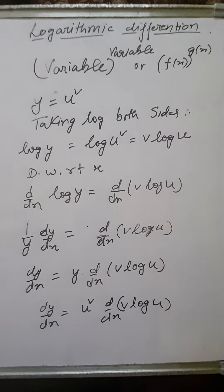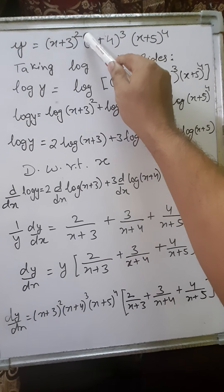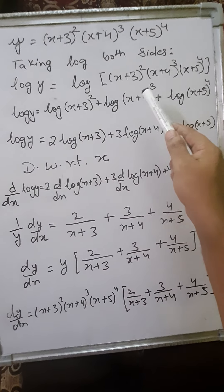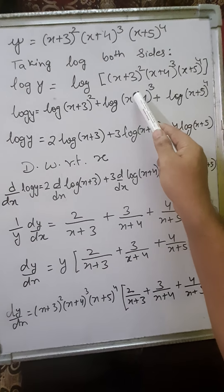Let's solve a few sums to understand the topic more clearly. I have taken this first sum from your textbook where the function is given as y equals (x+3)² times (x+4)³ times (x+5)⁴. Now children, don't try to simplify this function directly — apply log. When we take log, we can see that the power could be 2 or it could even be 20 in another question, so don't try to simplify. We'll take log to simplify this sum.